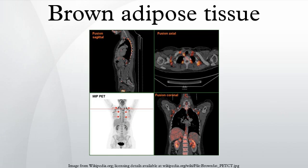To some degree, all cells of endotherms give off heat, especially when body temperature is below a regulatory threshold. However, brown adipose tissue is highly specialized for this non-shivering thermogenesis. First, each cell has a higher number of mitochondria compared to more typical cells. Second, these mitochondria have a higher than normal concentration of thermogenin in the inner membrane.